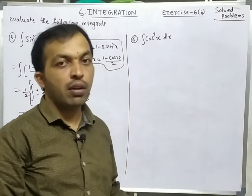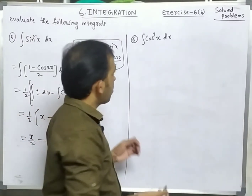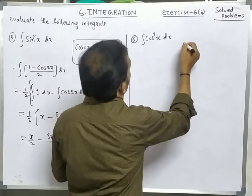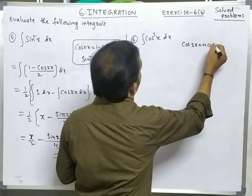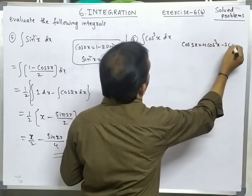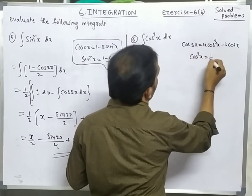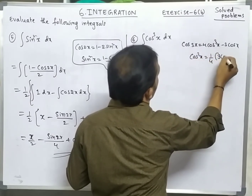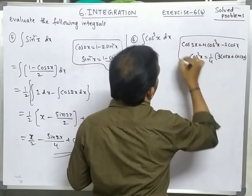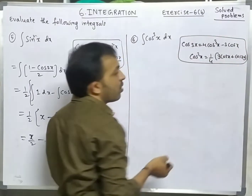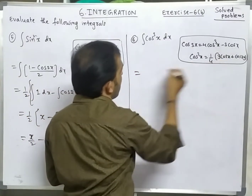Next: cos³x. We already did integration of sin³x in exercise. For cos³x, we use the triple angle formula: cos 3x = 4cos³x - 3cos x. From this, cos³x = (1/4)(3cos x + cos 3x).